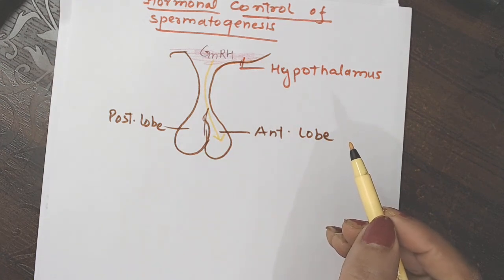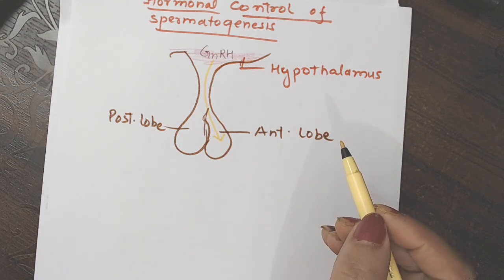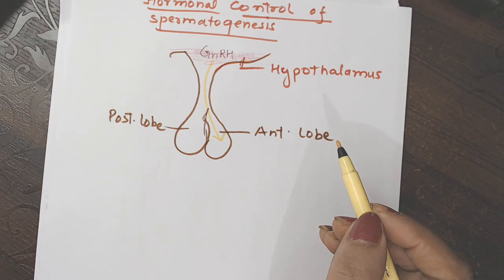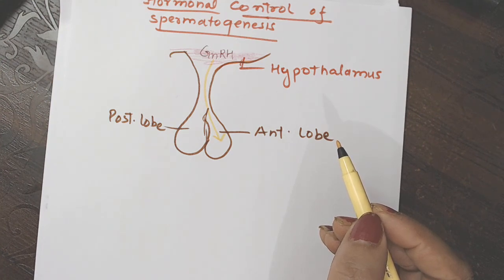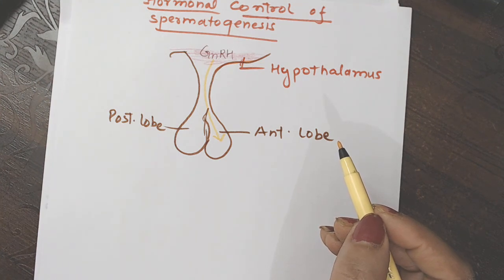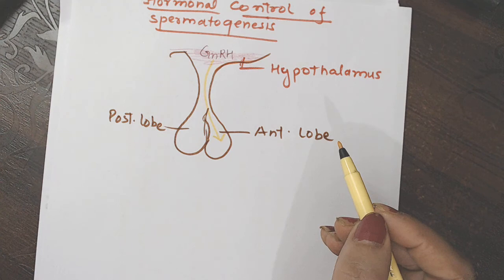This hormone is received by the anterior lobe of pituitary. And the cells of anterior lobe of pituitary stimulate and they secrete two hormones. Do hormone kaun-kaun se release karega? They are releasing LH and FSH.